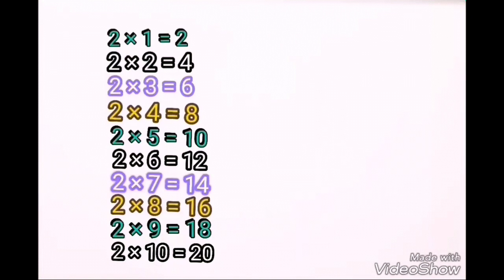Two ones are two. Two twos are four. Two threes are six. Two fours are eight. Two fives are ten. Two sixes are twelve. Two sevens are fourteen. Two eights are sixteen. Two nines are eighteen.